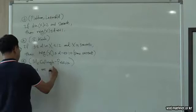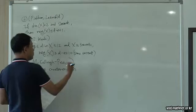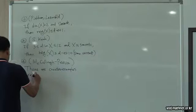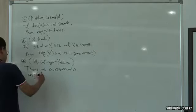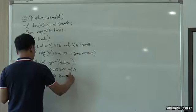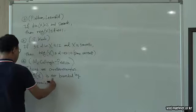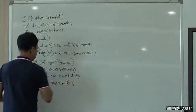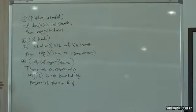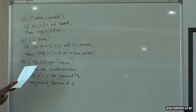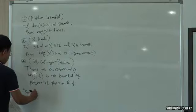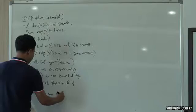Very recently, two people constructed counter-examples — in fact, many counter-examples — to this regularity conjecture. Moreover, they show that in general, if X is not smooth, the regularity cannot be bounded by any polynomial function of degree D. If X is smooth, by Mumford we know the regularity is bounded by (N+1) times degree, but in general it cannot be bounded by a polynomial function. So the smooth case remains open.